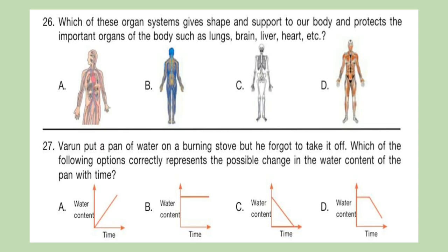Question 27: Varun put a pan of water on a burning stove but he forgot to take it off. Which of the following options correctly represents the possible change in the water content of the pan with time? Look at the figures shown here and choose your answer carefully.